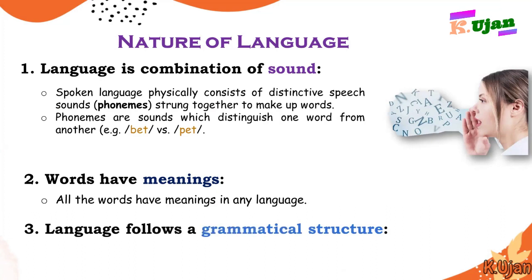Number three: language follows a grammatical structure. There are certain parameters and principles that a language follows. Those parameters and principles are known as grammatical structures. This is one of the natures of language — that language has grammatical structures.